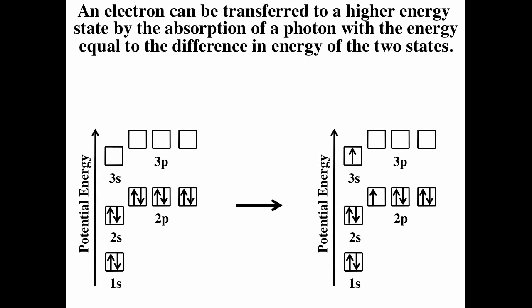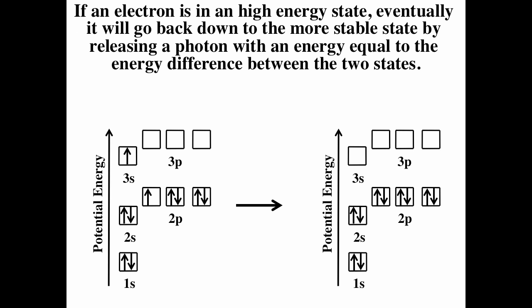In this case, this is an example of absorption spectroscopy. You're seeing what light is absorbed to excite the electron. In this case, it's emission spectroscopy. You excite your sample using, say, a flame or electricity, and then you measure the light released when it goes back down to its ground state.